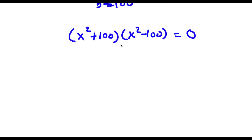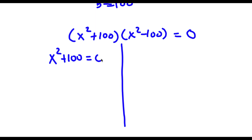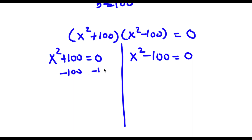So now this is going to give me two equations. I have x squared plus 100 is equal to zero, and x squared minus 100 is equal to zero. For x squared plus 100 equals zero, I'm going to start by subtracting 100 on both sides, so these two cancel out and I'm left with x squared is equal to negative 100.